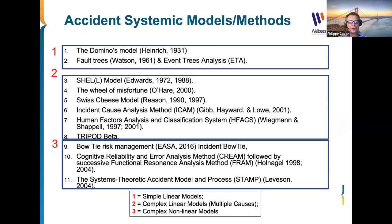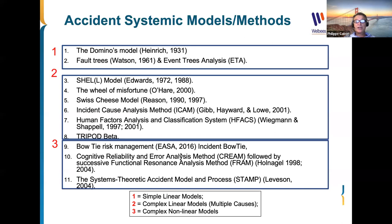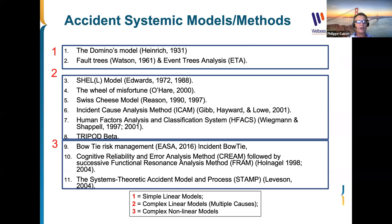The third generation is called the complex non-linear models, where you have the concept that accidents occur because of a complex combination of causes — including some causes which are not active causes, but something latent in the system that did not really show up during the accident.